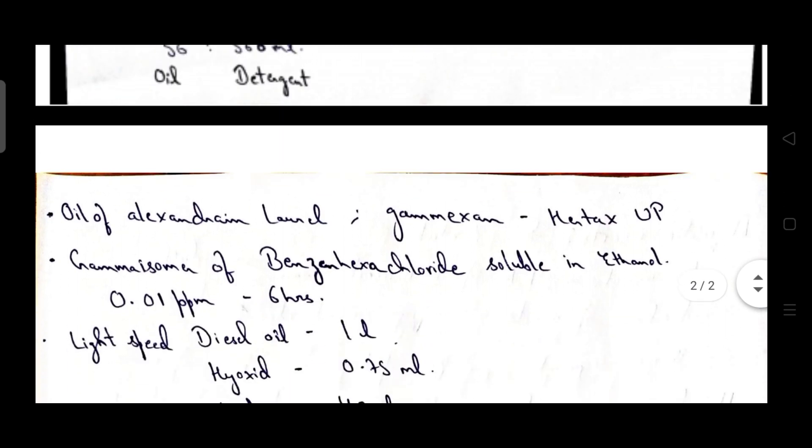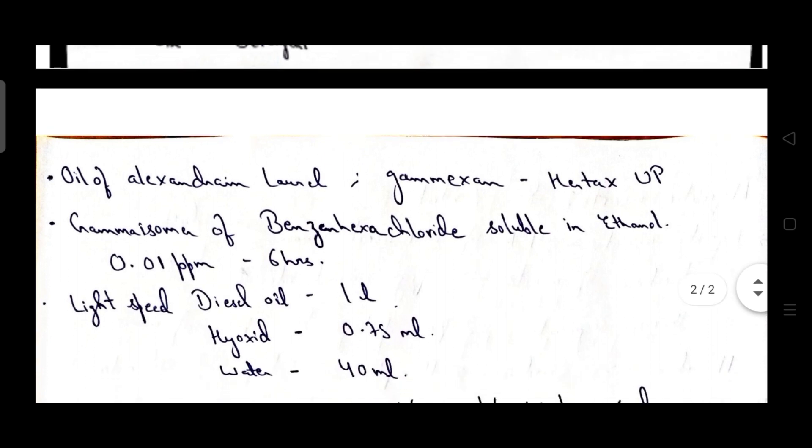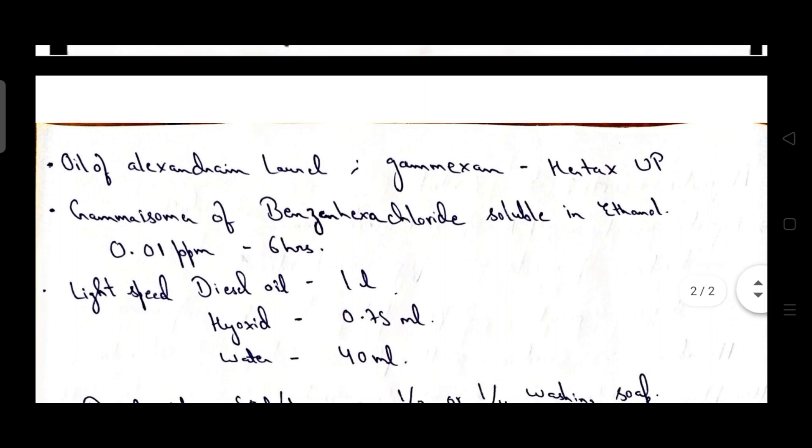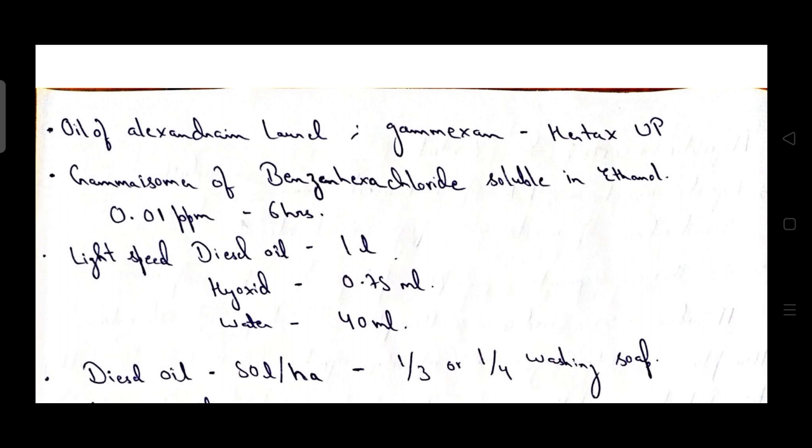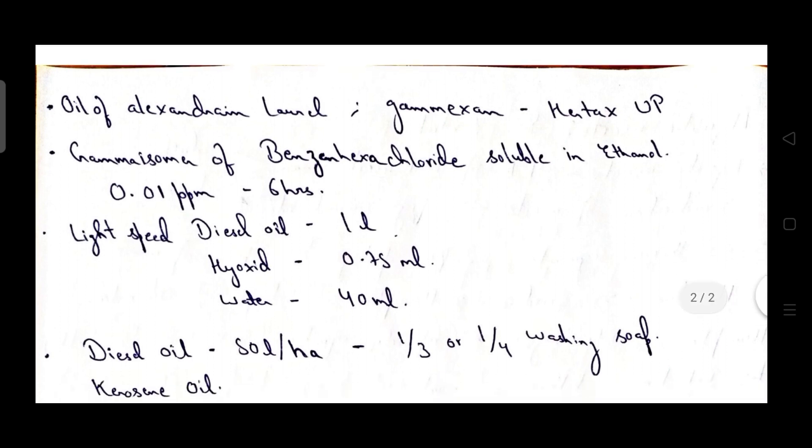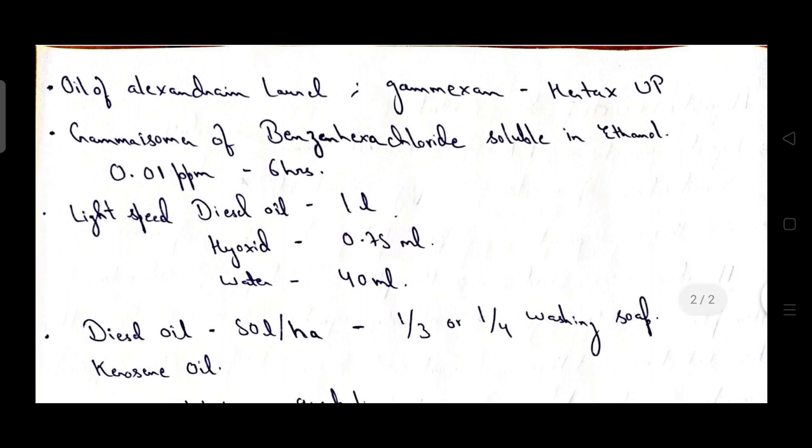Another technique includes oil of Alexandrium laurel and Gamexin, manufactured in the name of Vertex UP. Gamma isomer of benzyl hexachloride, soluble in ethanol, concentration is 0.01 ppm and can kill insects in six hours.